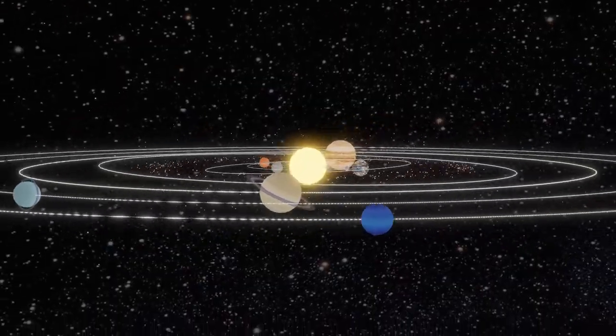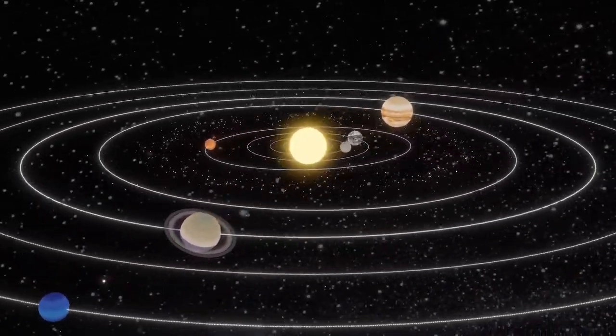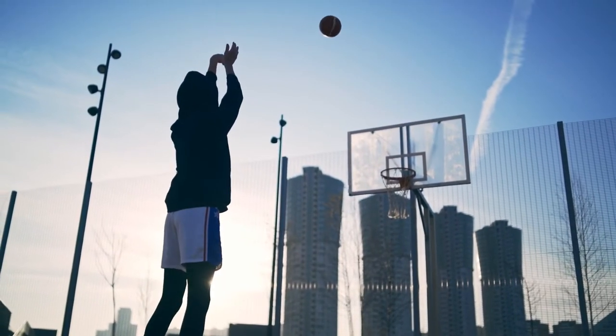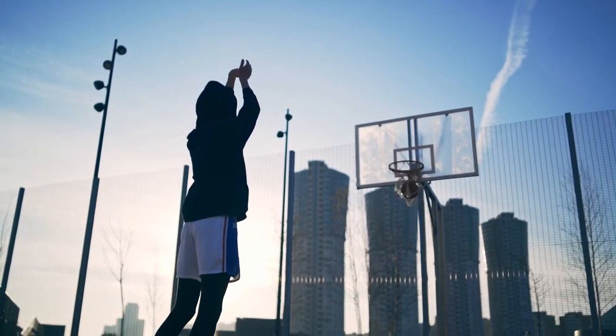The sun's gravity keeps all of the planets in orbit around it. Earth's gravity is what keeps you on its surface and what makes things fall to the ground.